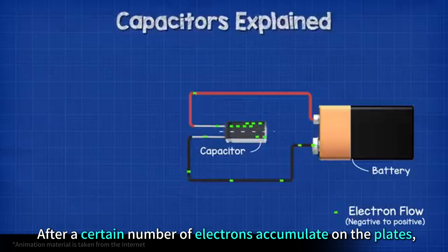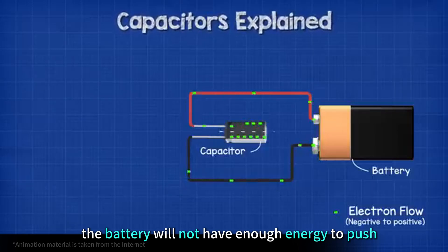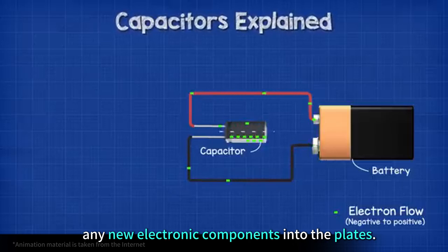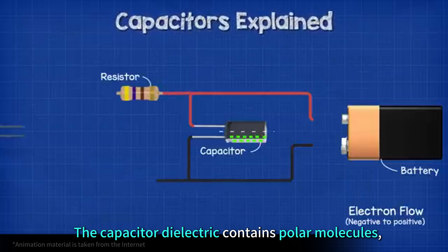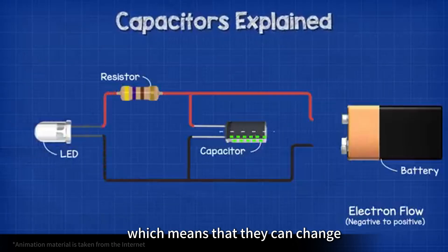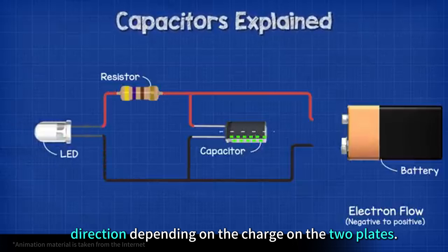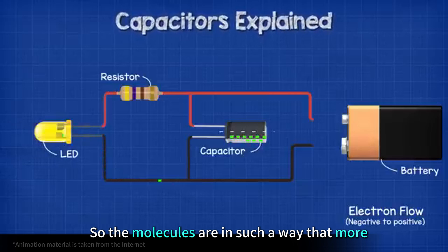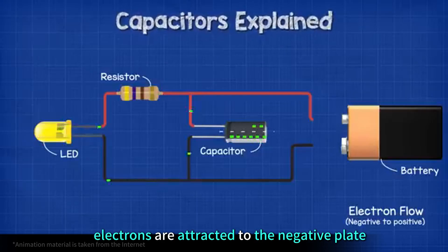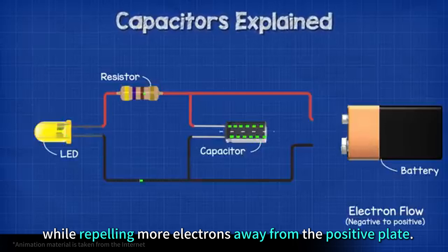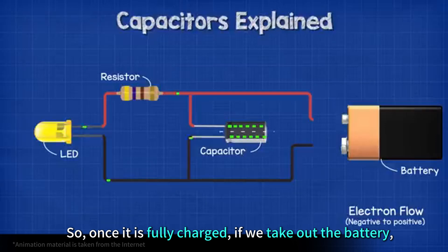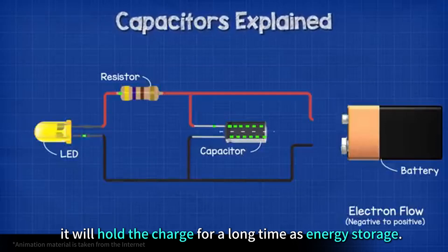After a certain number of electrons accumulate on the plates, the battery will not have enough energy to push any new electrons into the plates. The capacitor dielectric's polar molecules can change direction depending on the charge of the two plates, so the molecules orient in such a way that more electrons are attracted to the negative plate while repelling more electrons away from the positive plate. Once the capacitor is fully charged, if we remove the battery, it will hold the charge for a long time as energy storage.